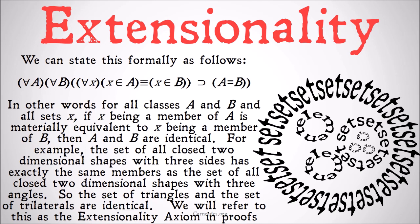We will refer to this as the extensionality axiom in proofs. You'll note that I use capital letters to refer to classes and lowercase letters to refer to sets. We're going to start doing that more and more as we dig deeper into the distinction between classes and sets. Sets are always members of the universal class, so we'll use lowercase letters generally for sets and uppercase letters for the broader definitions of classes and possibly sets.